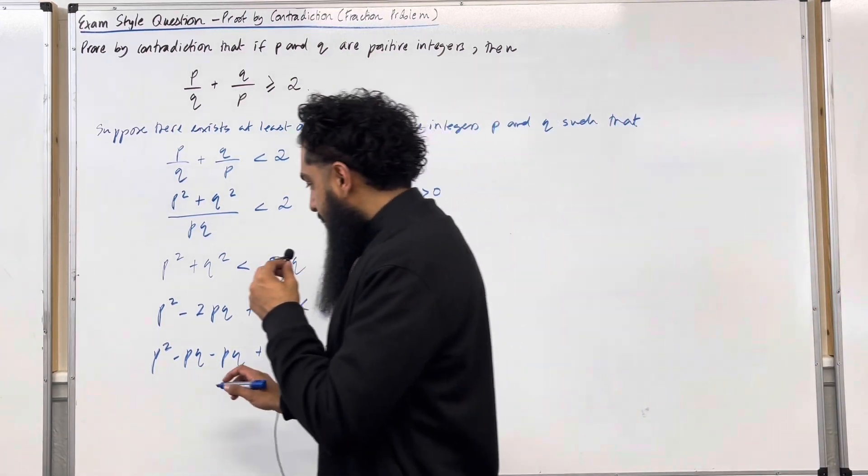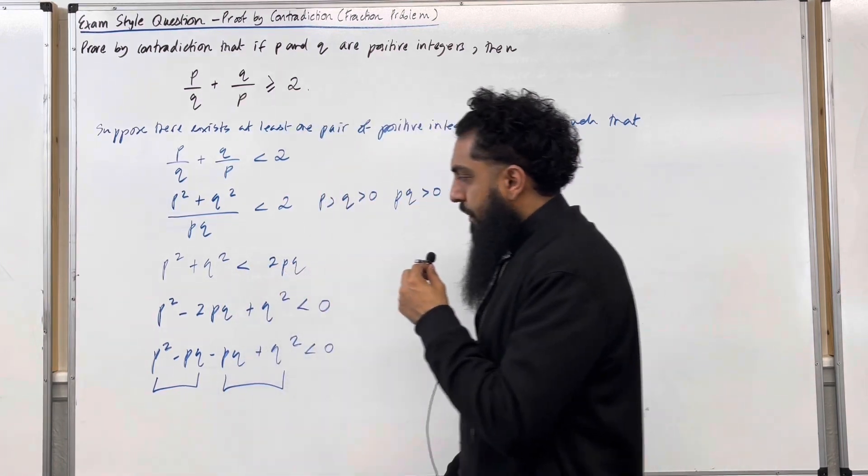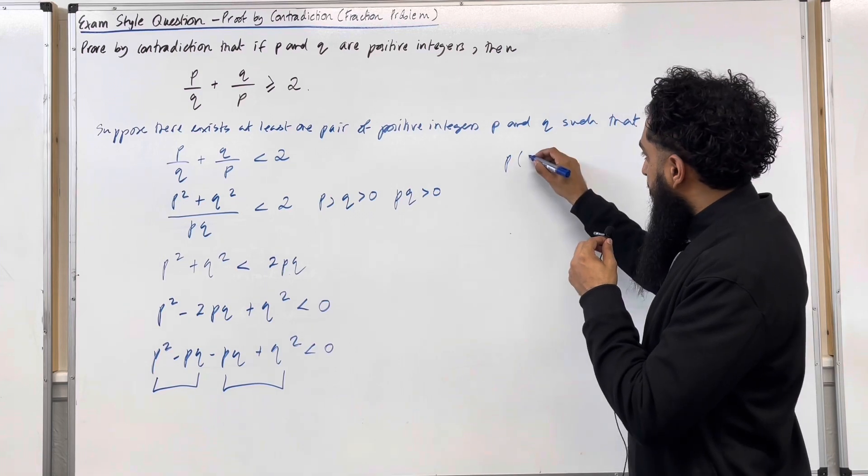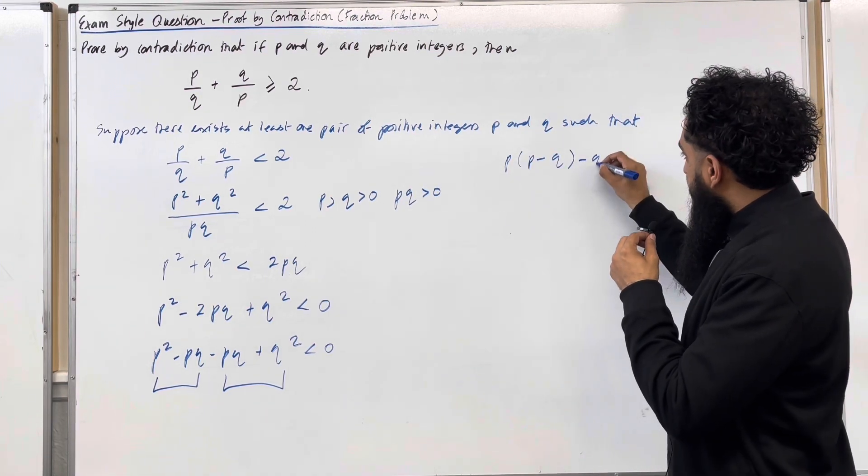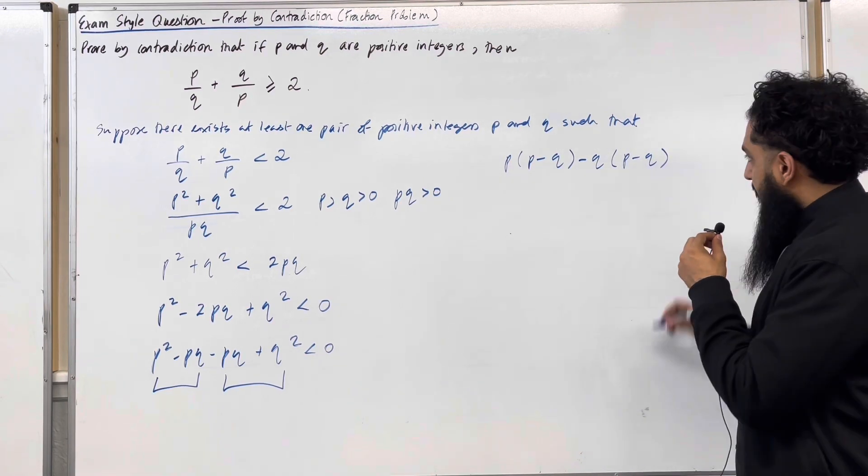Okay, so I can factorize these two terms and then these two terms. I've got p, open bracket, p minus q. Then I've got minus q, open bracket, p minus q. This has to be less than 0.